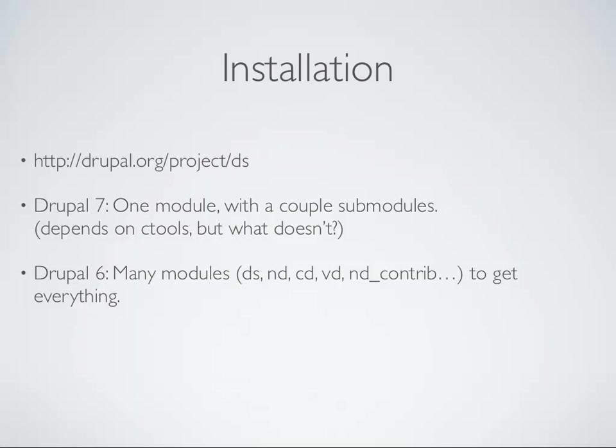Ctools — the long name of that is Chaos Tools, named for Merlin of Chaos, who is Earl Miles, who will be here tomorrow presenting as well. So watch for that. In Drupal 6, it's a bunch of modules. What you would do is go to the Display Suite page and it will point you to all the other ones. The abbreviations for people who use Drush or just want to write them down are here on the slides. You get those, and you'll get pretty much everything that the Drupal 7 version includes.